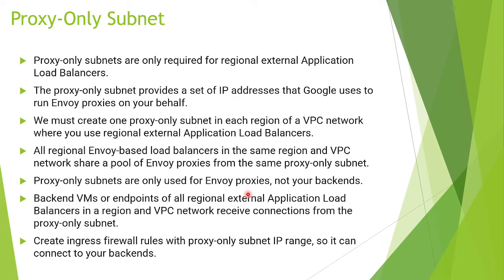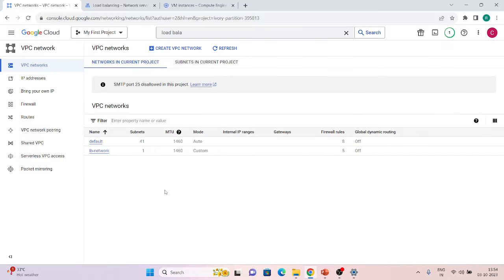When traffic hits your load balancer, it terminates the connection and creates a new connection using the proxy-only subnet. One important point: when we create a proxy-only subnet, we also have to create an ingress firewall rule allowing traffic from the proxy-only subnet so it can connect to your backends. This is because traffic now comes from the proxy-only subnet, not directly from the load balancer.